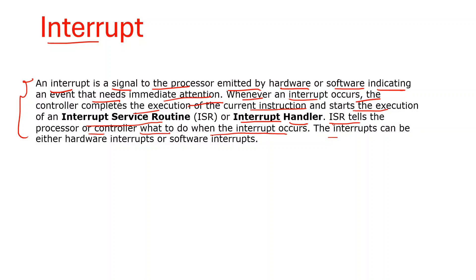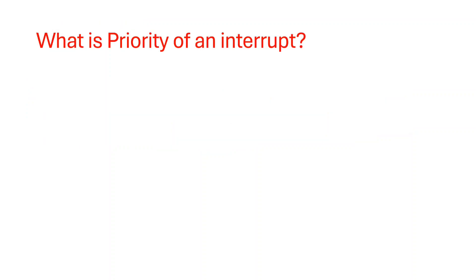The interrupts can be either hardware or software interrupts. Now, what is the priority of an interrupt? Whenever two or more interrupts occur at the same time, what should be executed first and what should be executed next? That is based on the priority.